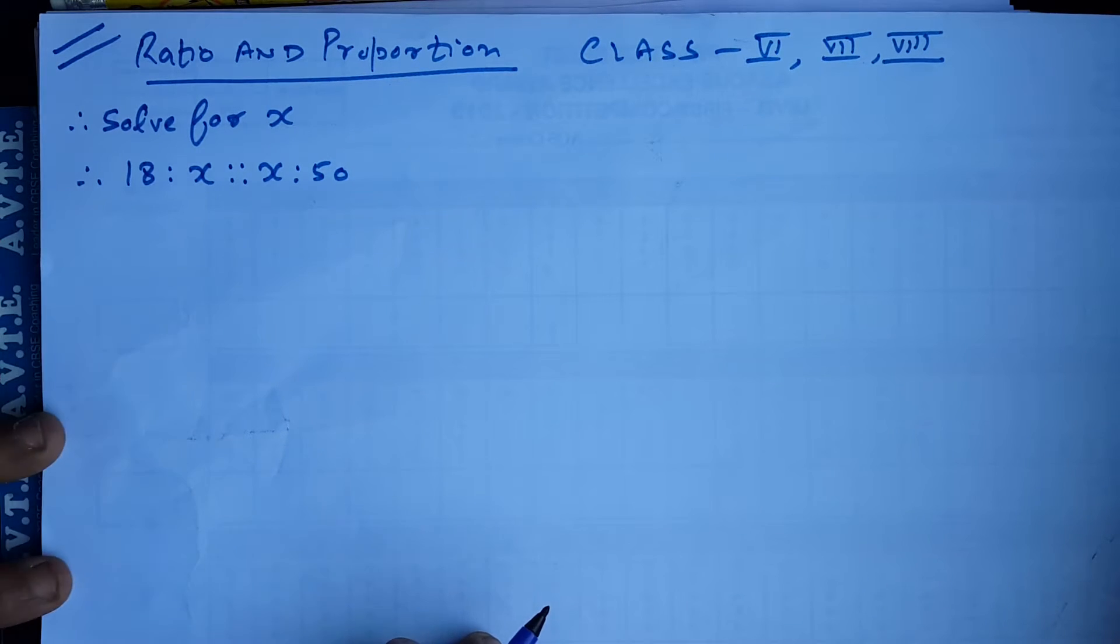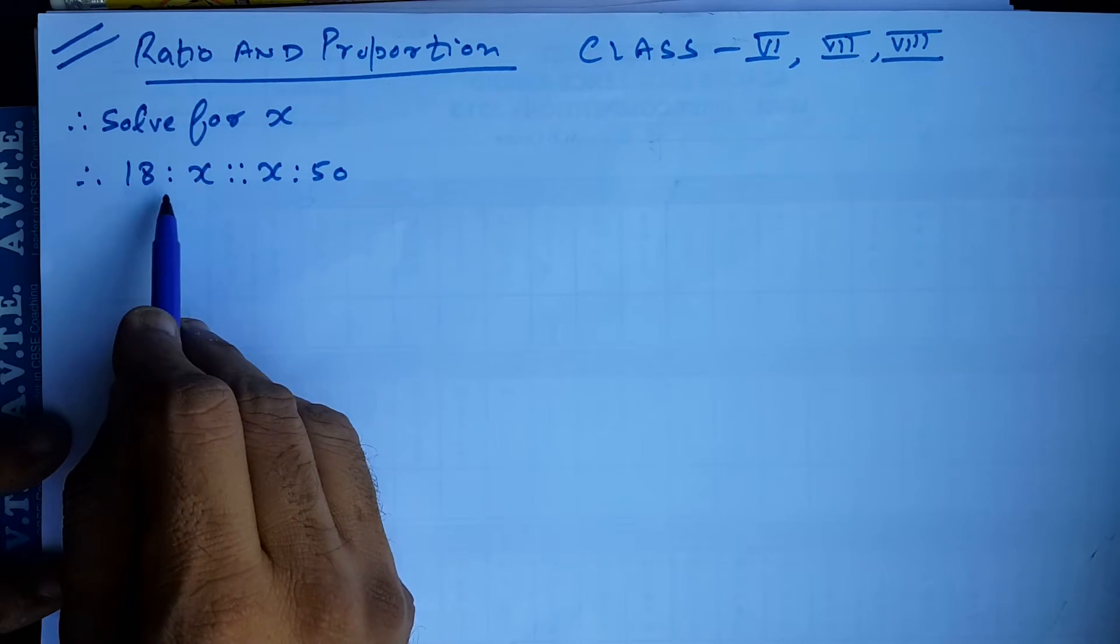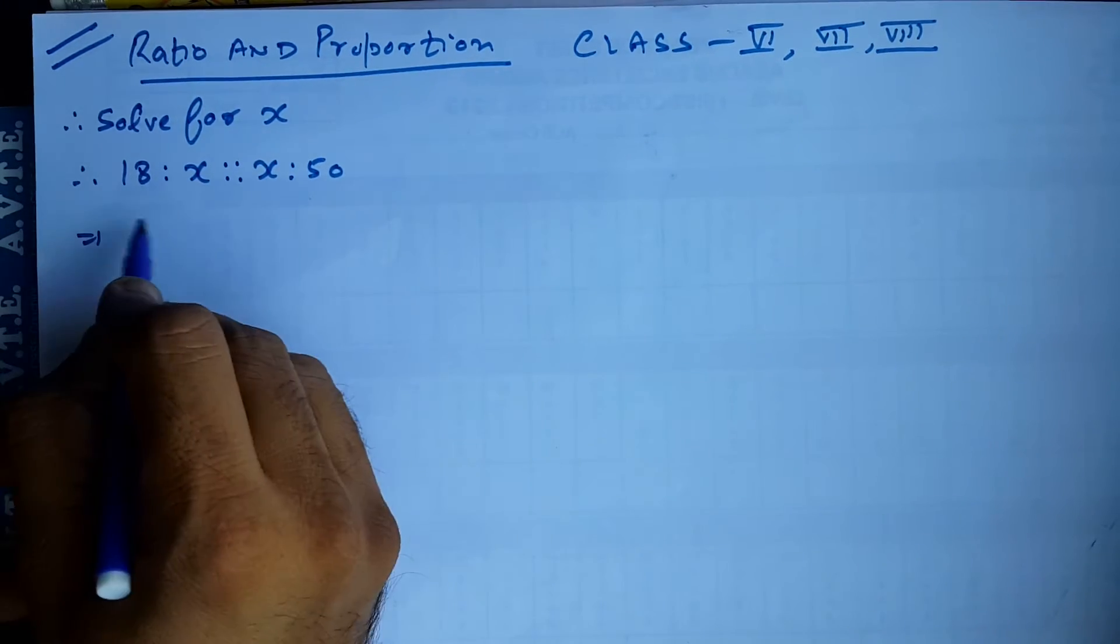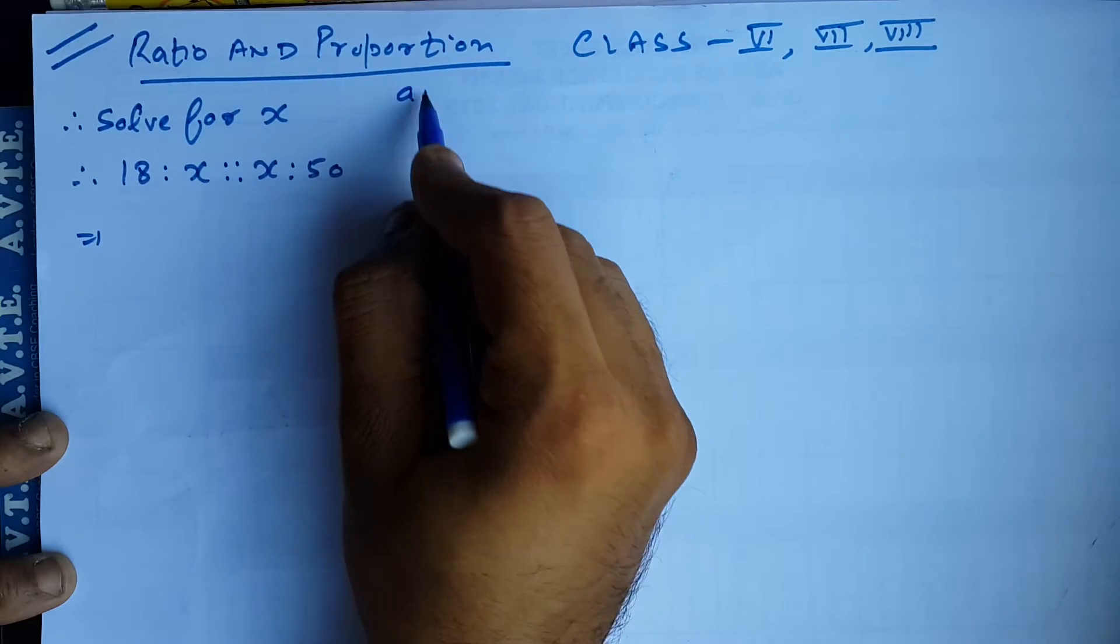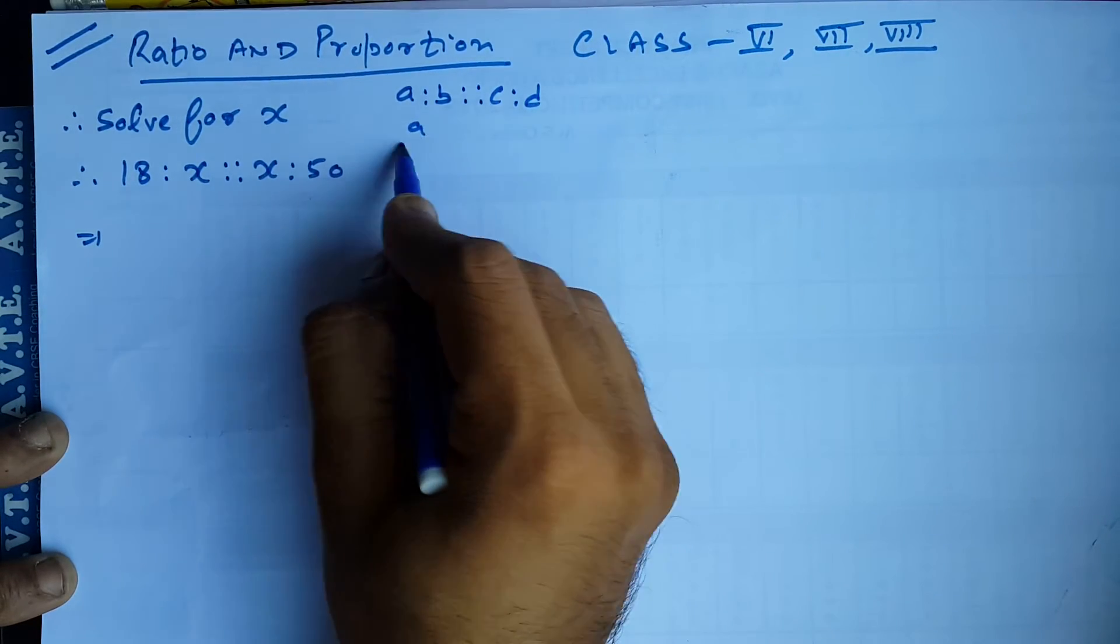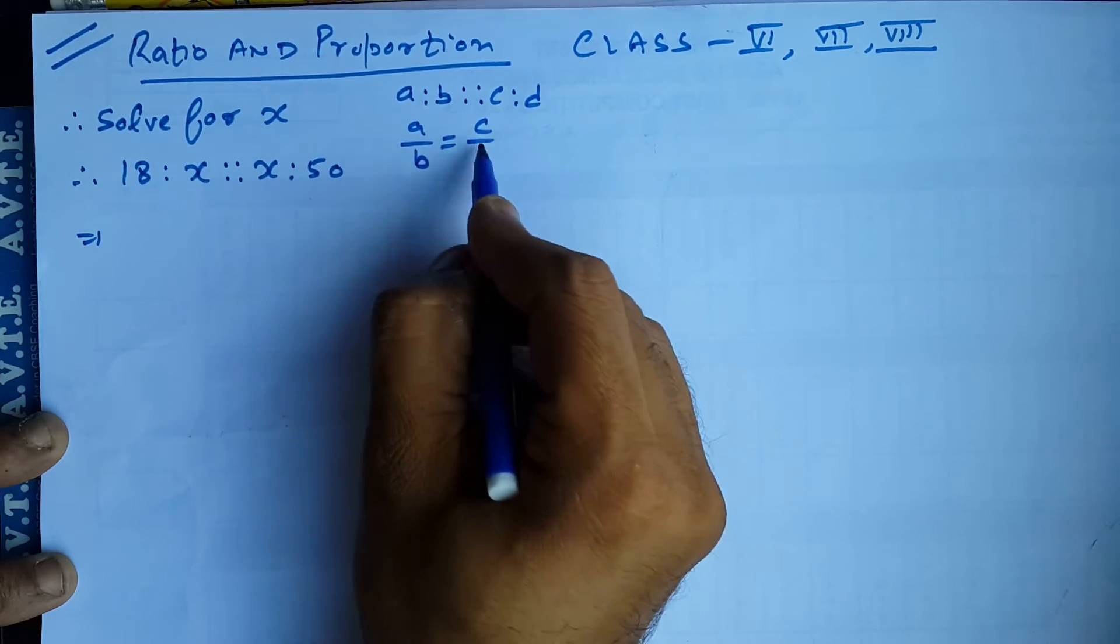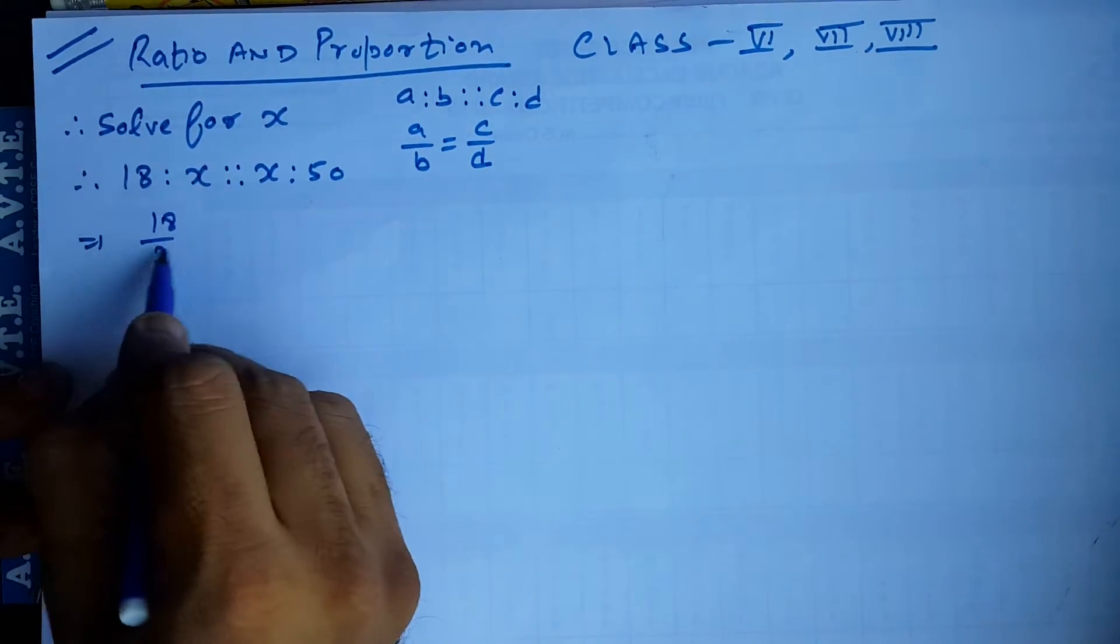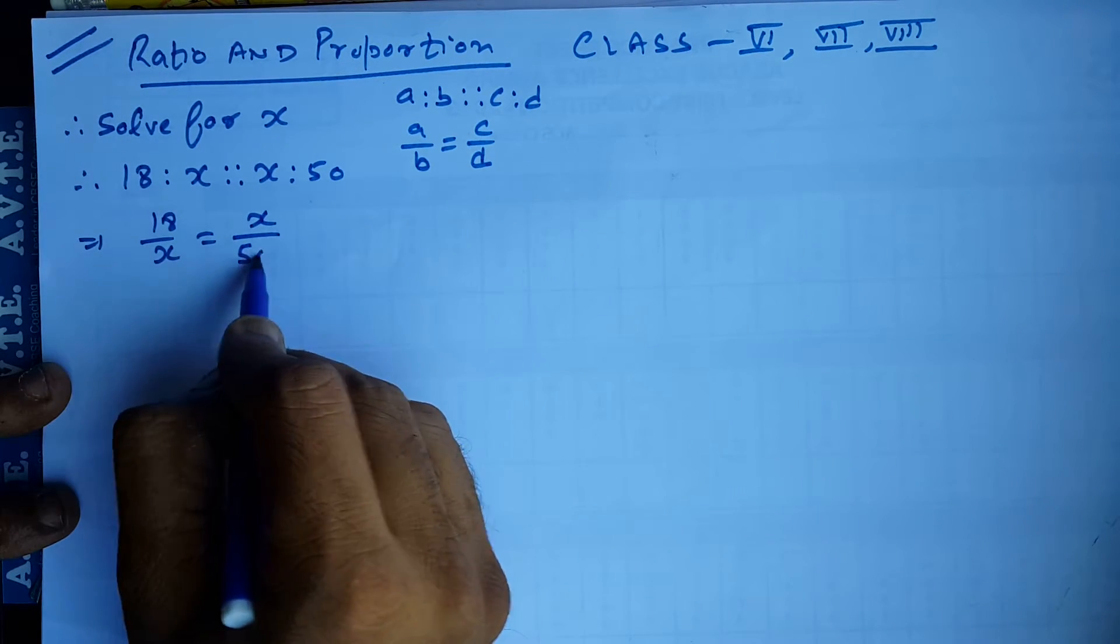So we are doing a question on ratio and proportion. The question is 18 is to x is to x is to 50. This is the logic: a is to b is to c is to d. So this is a upon b is equal to c upon d. This is 18 upon x is equal to x upon 50.